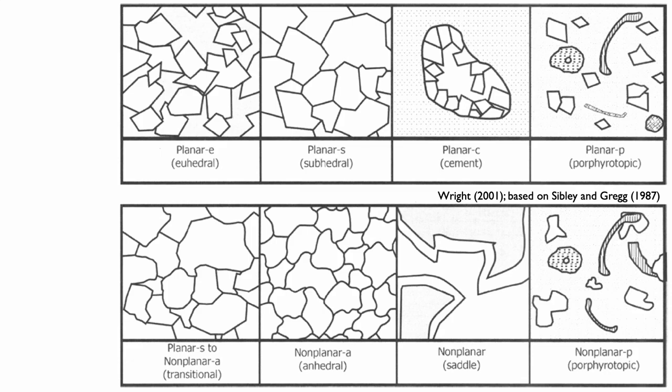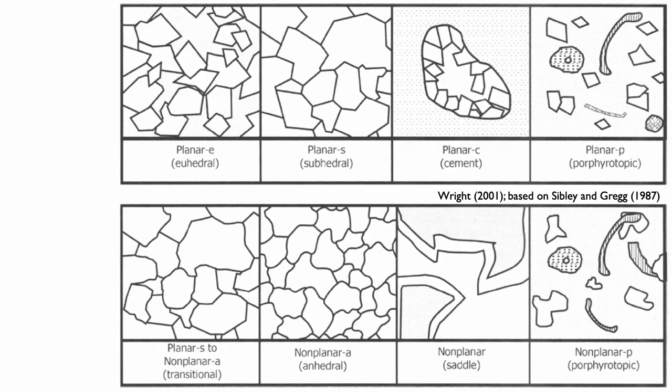The classification is based first on looking at the plane of the crystals of dolomite. Either they can be straight — then this is called a planar dolomite, as shown in the examples at the top — or they can be non-planar, as shown in the examples at the bottom.